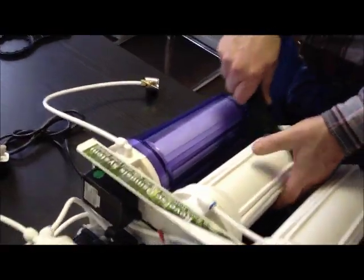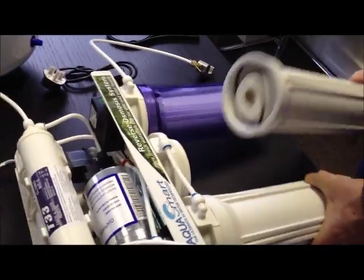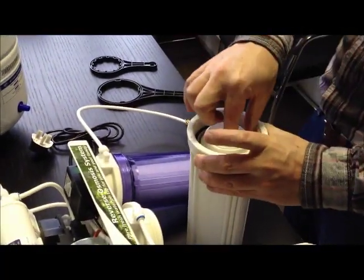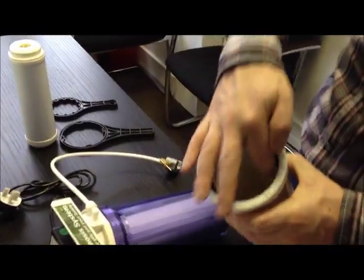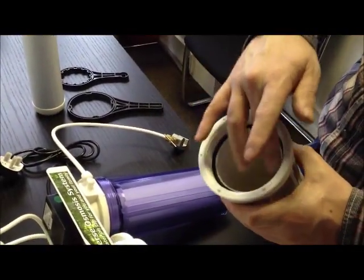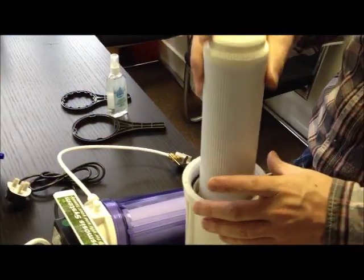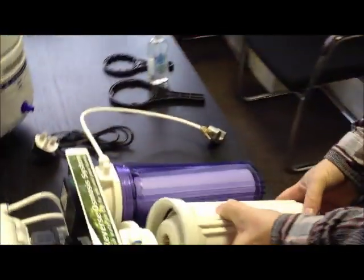Next, remove the loose carbon filter. As before, remove the old filter. Clean the housing with a cloth and use a disinfectant. Insert the new filter and screw on the housing. Tighten with the wrench provided.